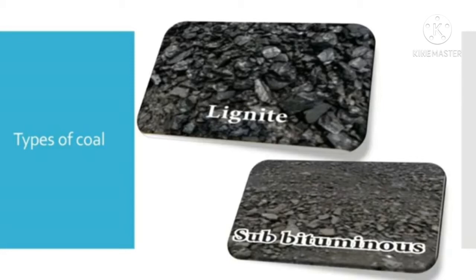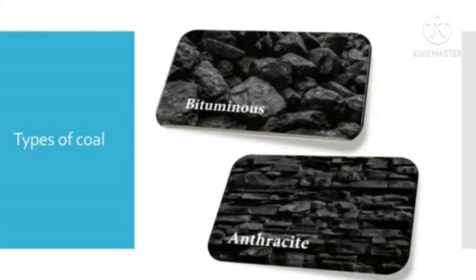Subbituminous coal is a black and dull coal. It has a higher heating value than lignite and contains 35 to 44% carbon. Subbituminous coal is used primarily as fuel for electricity power generation. This coal has lower sulfur content than other types and burns cleaner. With more chemical and physical changes, subbituminous coal is developed into bituminous coal.